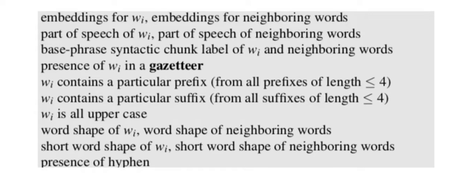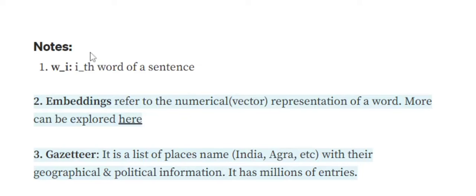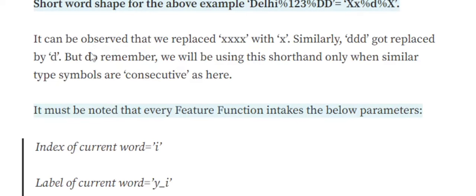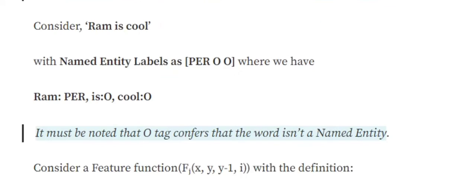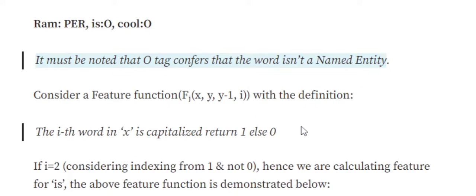If we input a word, we get a set of features: whether the first letter is capital (true/false), whether vowels are present (true/false), whether a particular prefix is present like 'in' or 'un', or whether a suffix is present like 'ed' or 'ing'. Feature functions are dependent upon the developer — they can choose as many as they wish.